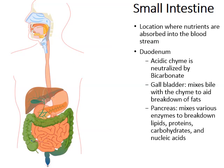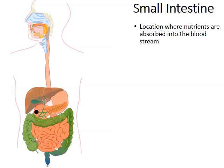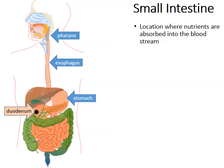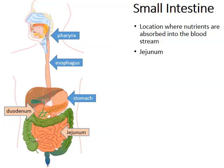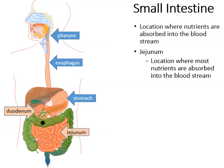Looking back at the diagram of the small intestine, we can see the food in the first part known as the duodenum. To recap: the back of the throat is the pharynx, the tube leading down is the esophagus, which leads into the stomach, and from the stomach the soupy mixture called chyme enters the duodenum. That chyme then passes through the jejunum — the second part of the small intestines — which is the location where most nutrients are absorbed into the bloodstream.